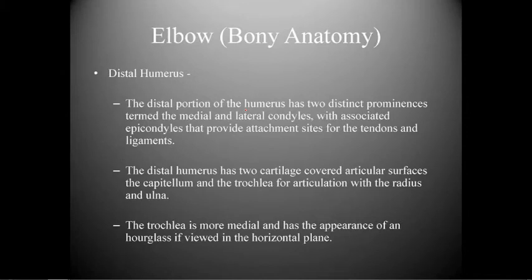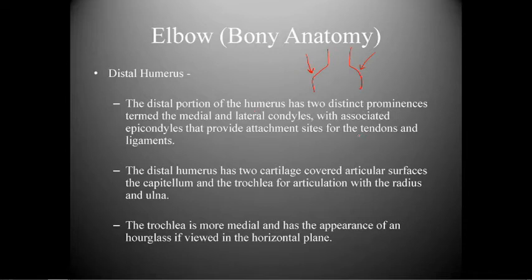The distal humerus has two distinct prominences — the medial and lateral epicondyles — which provide attachment sites for tendons and ligaments. It also has two cartilage-covered articular surfaces: the capitulum and the trochlea, for articulation with the radius and ulna respectively. The trochlea is more medial and has the appearance of an hourglass fixed in the horizontal plane.